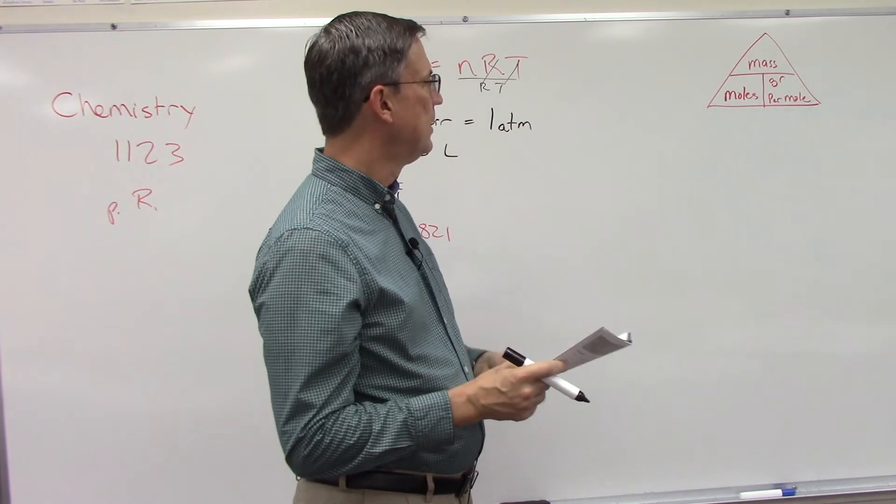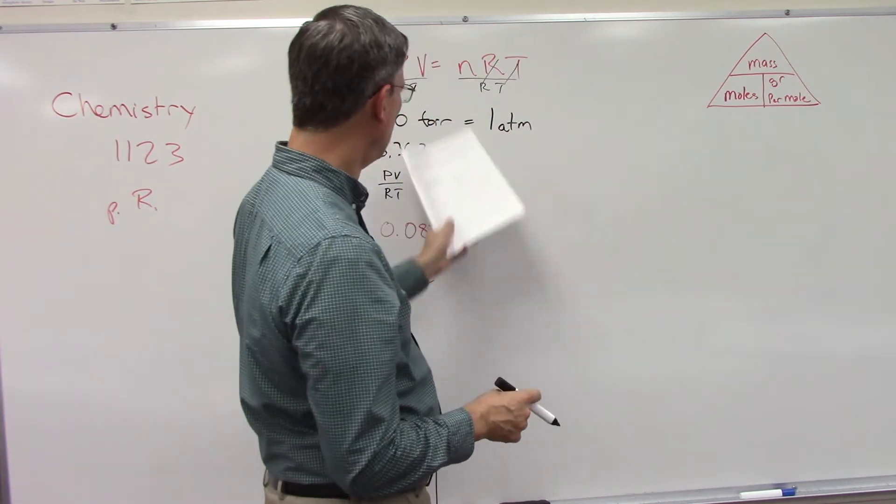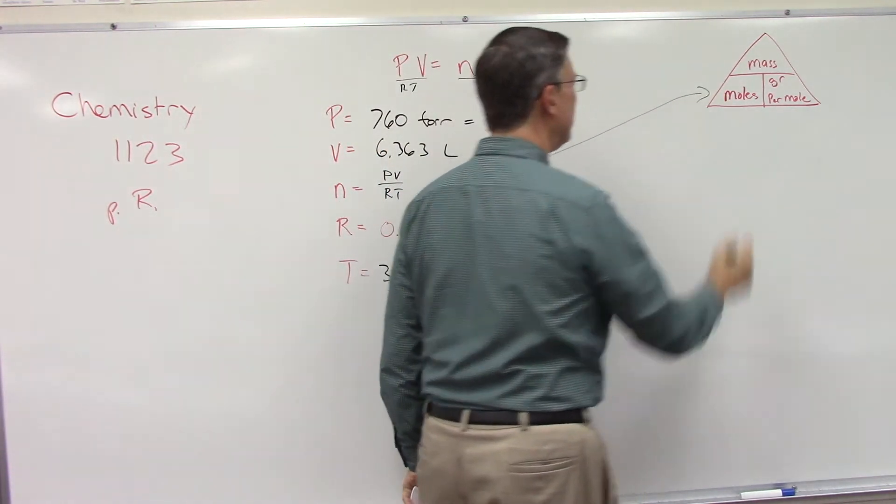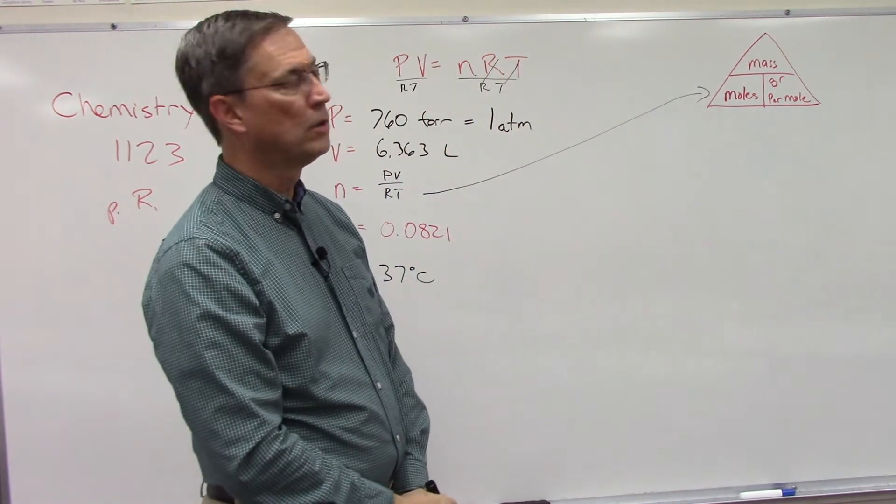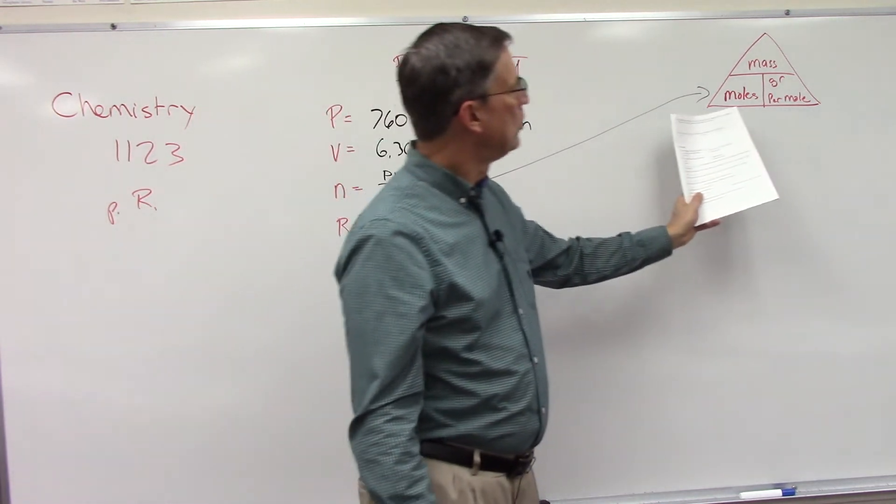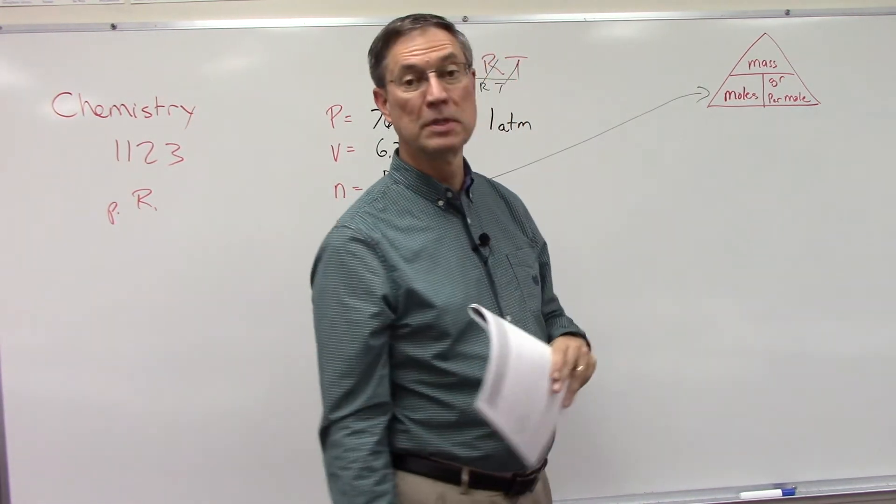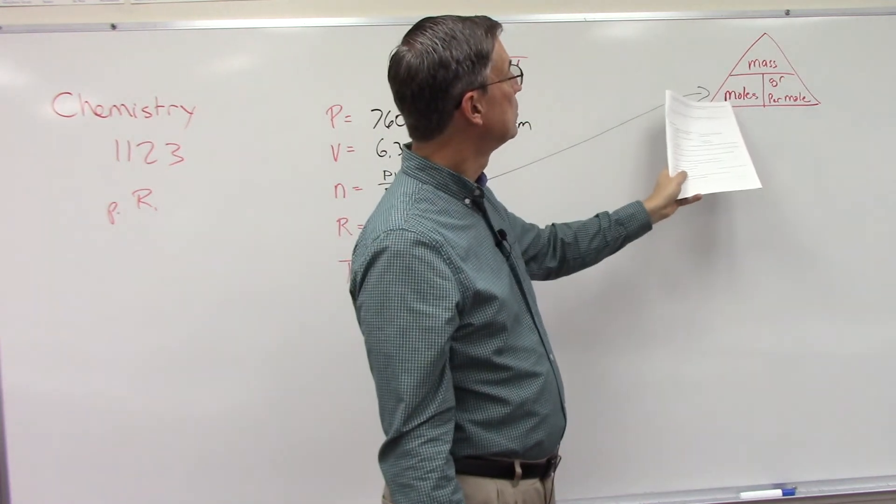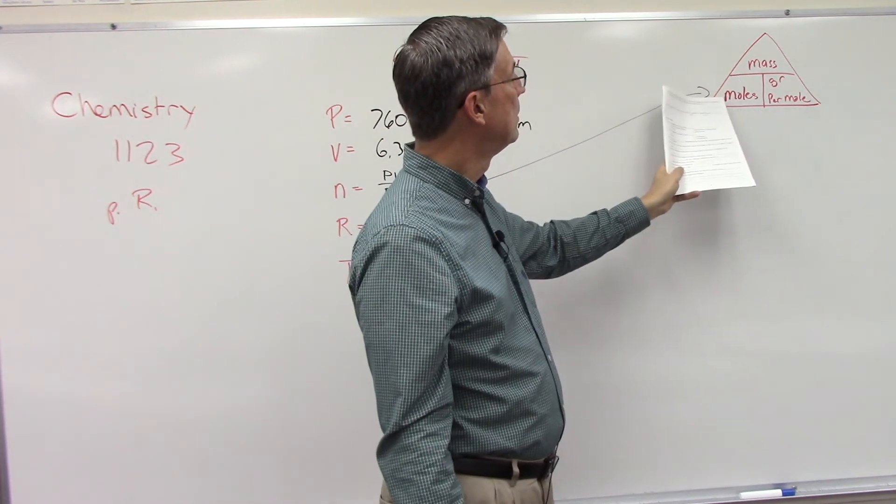So first we have to find the number of moles, which is what this formula will give us. Then that's going to come over here and plug into our magic triangle—number of moles and then the mass. In this case, the mass was given as 11.003, and so we can divide by the number of moles.